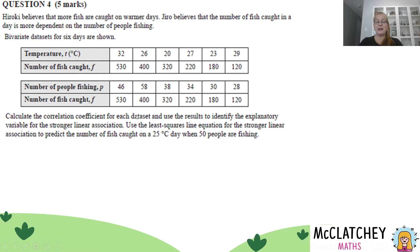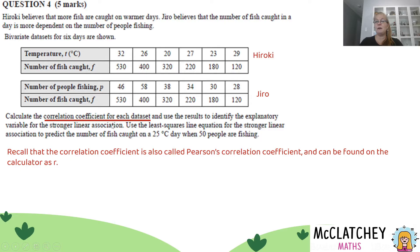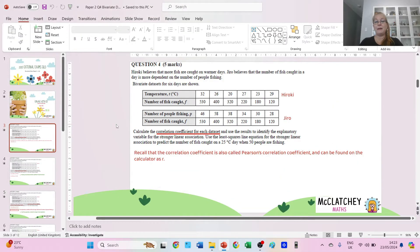Let's break this down into smaller parts. We know this is Hiroki because Hiroki believes the temperature has an effect on how many fish you're catching, and that means this one is Jiro's model. So we're going to calculate that correlation coefficient. It's also called Pearson's correlation coefficient, represented by the letter R on your calculator and formula sheet. The best place to go is to your calculator.